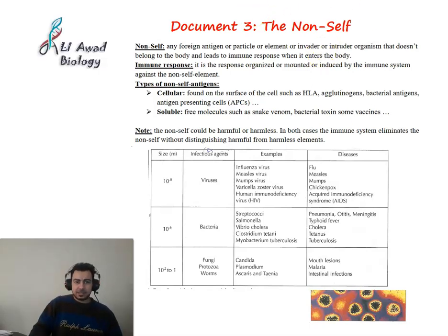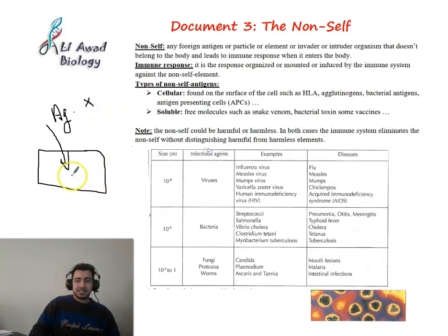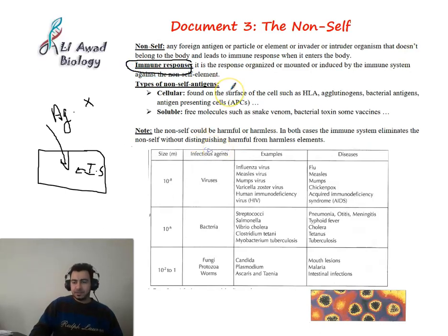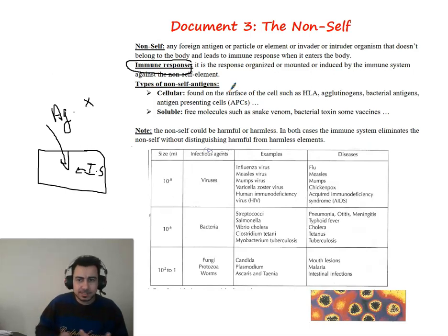If I take a mouse and inject it with an antigen - let's abbreviate it as Ag - antigen X for example, when antigen X enters the body of the mouse, the immune system attacks this antigen. This attack is called the immune response.